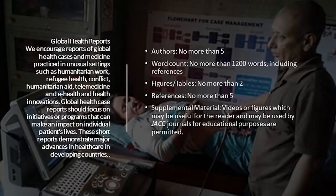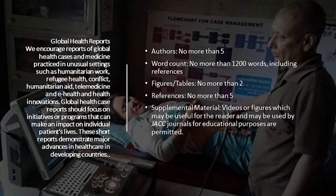The next article type is Global Health Reports. We encourage reports from all around the world, especially from low-income countries, to demonstrate humanitarian work, refugee health, conflict, humanitarian aid, telemedicine, and e-health. It is important that these reports focus on initiatives or programs that can make an impact on individual patients' lives. No more than five authors are permitted. The Global Health Report is no more than 1,200 words including references, and you may use up to two figures or tables and the necessary references.